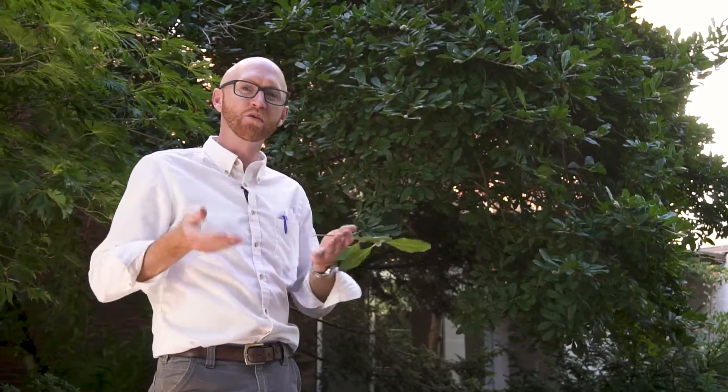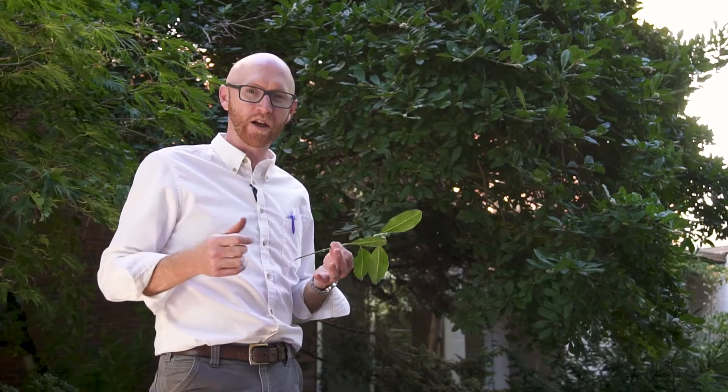So Magnolia stellata, or star magnolia, its flowers are white. It has upwards of 20 tepals that are fully reflexed, and they're quite narrow, more strap-like.